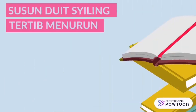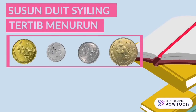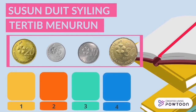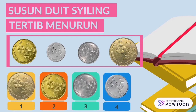Sekarang, mari kita menyusun duit syiling secara tertib menurun. Perhatikan wang yang berikut. Cuba murid-murid menyusun dari wang syiling yang besar sehingga yang kecil. Ya, tepat sekali jawapan murid-murid. Pandai!